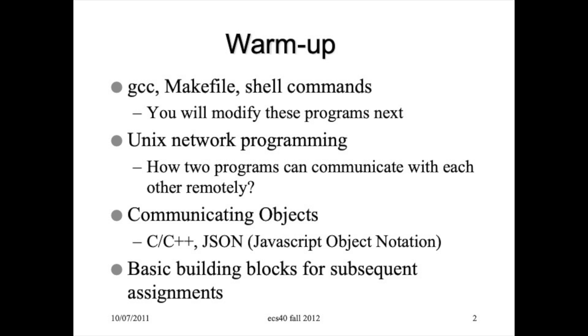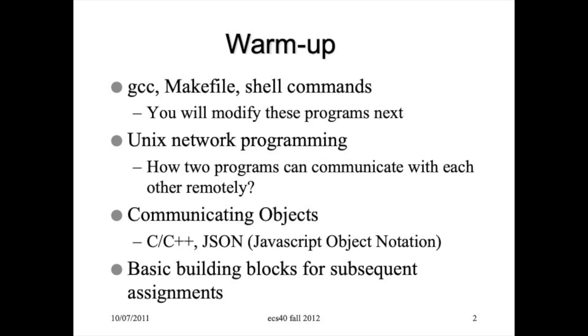This video is an introduction to our first homework assignment, which is really a warm-up. You don't have to write a single line of code, but you download the source code from our project server and use tools like GCC, makefile, shell commands, sftp, or ssh to compile and run the program. This homework is related to what we call inter-process communication, or more specifically, Unix network programming.